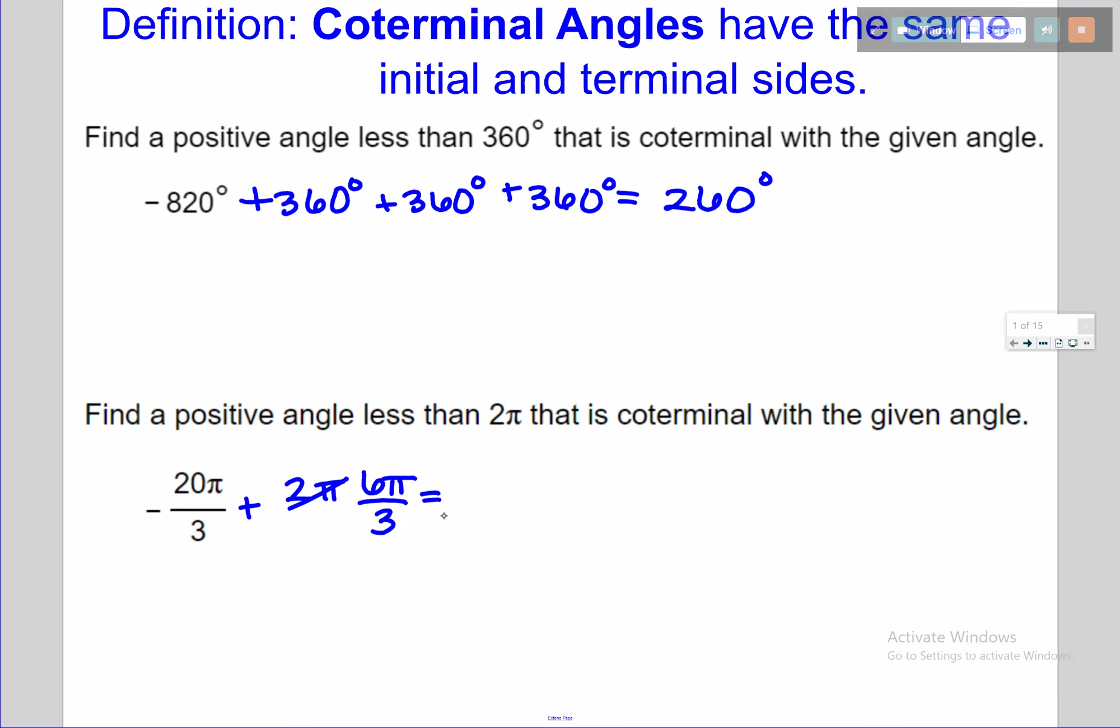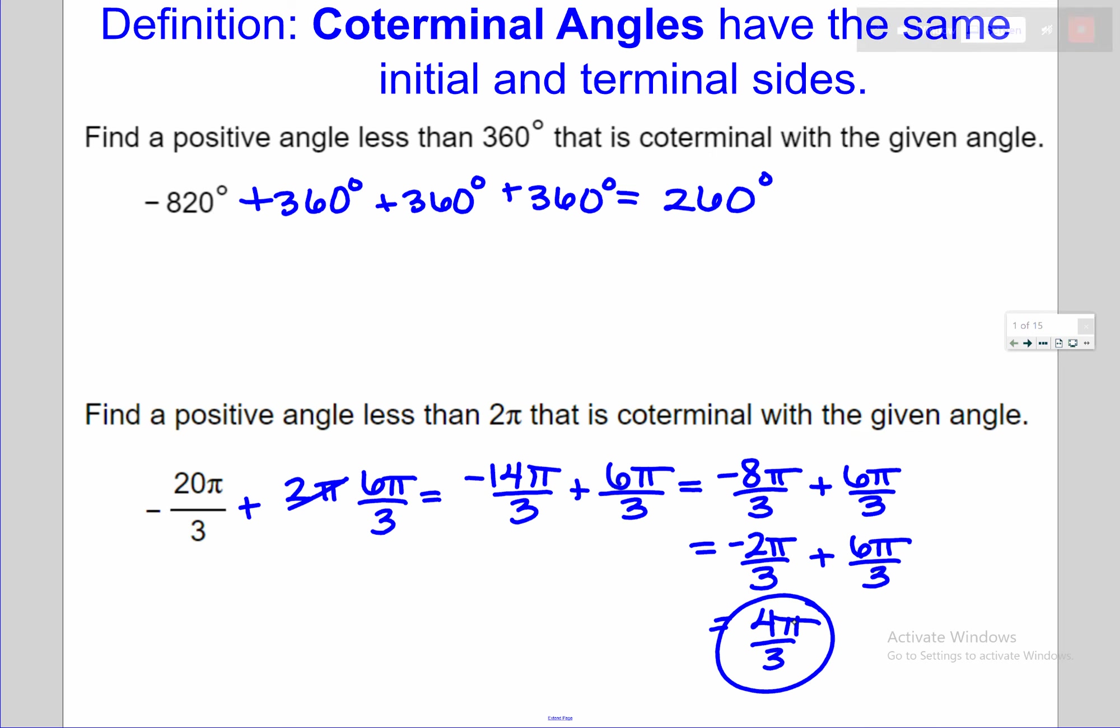I think it's easier to do these everything's just in terms of π. We're just going to carry the π through. What's negative 2/3 plus 6/3? Negative 14/3, still negative. Add it on again. That's going to give me negative 8π over 3. Add 6π over 3 again, that's going to give me negative 2π over 3. It's still negative, we're looking for a positive angle. Add 6π over 3 again and I get 4π over 3 is the angle that we're looking for.